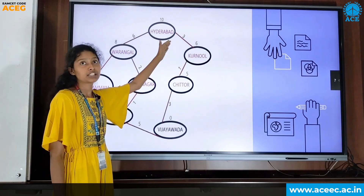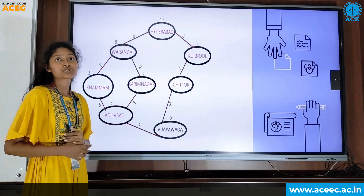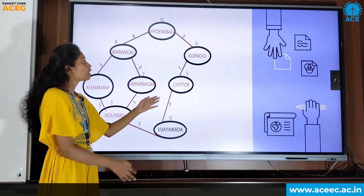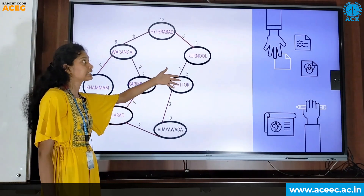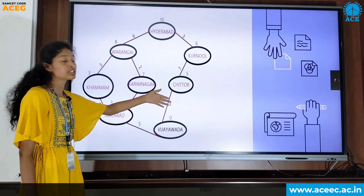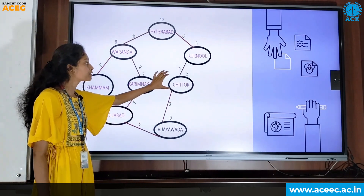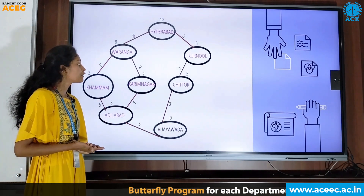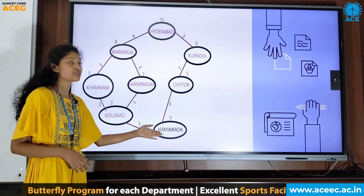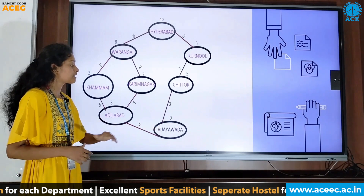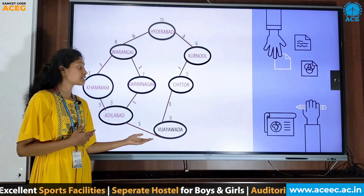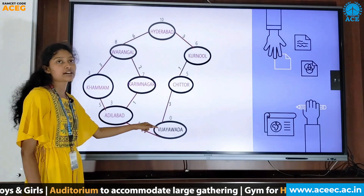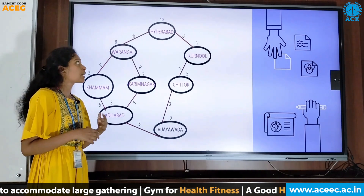Since 9 is less than 14, the shortest path is Hyderabad to Kurnool. The second step is to see the child nodes of Kurnool — there is only one child node, Chittur, so no need to calculate f(c). The third step is to see the child nodes of Chittur — there is only one child node, Vijayawada, which is the goal node. So the shortest path is: Hyderabad → Kurnool → Chittur → Vijayawada.